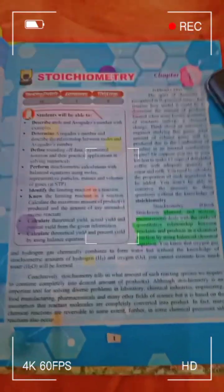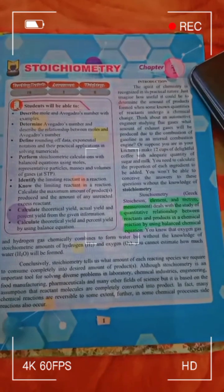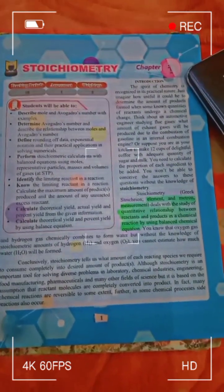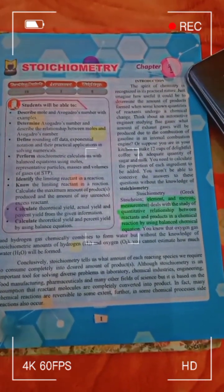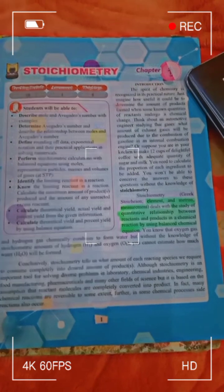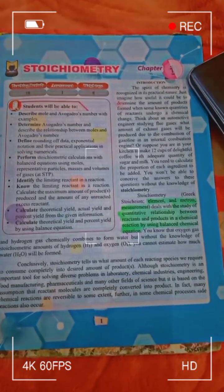What is stoichiometry? Stoichiometry is a Greek word citron. It deals with the study of the quantitative relationships between the reactants and a product in a chemical reaction by using a balanced chemical equation.